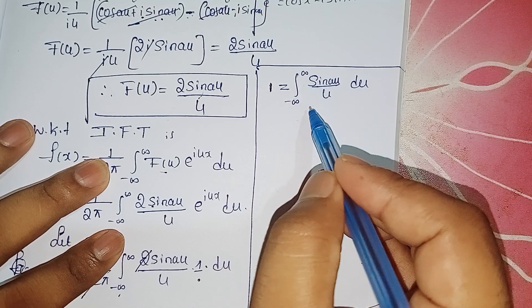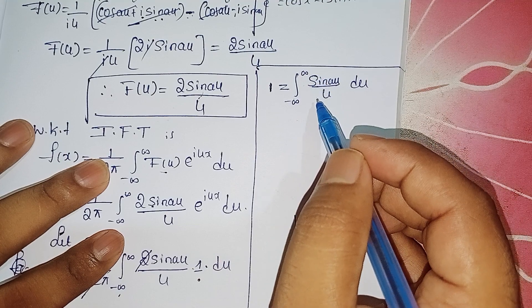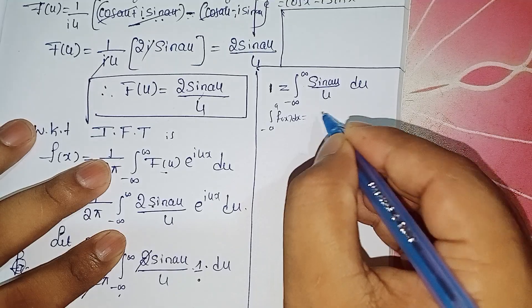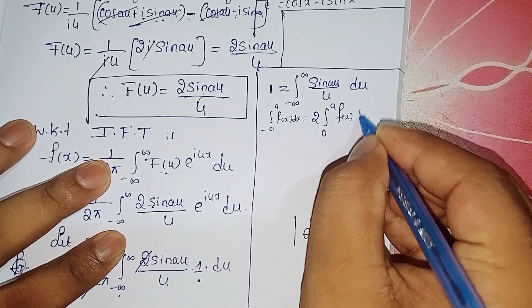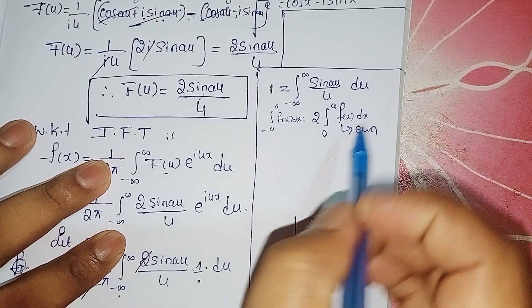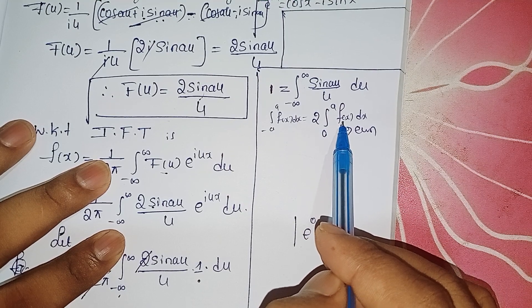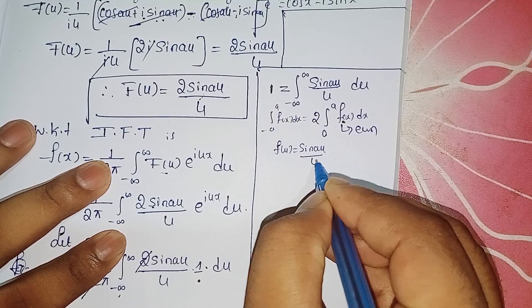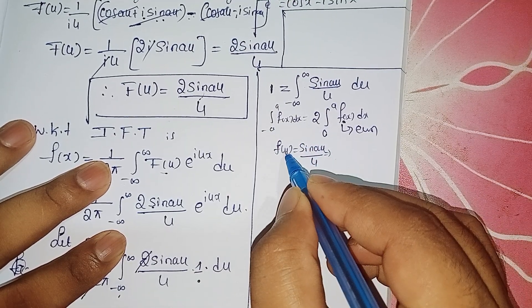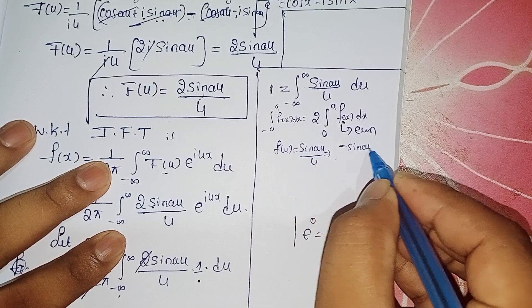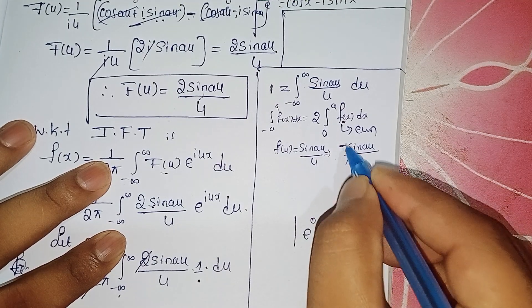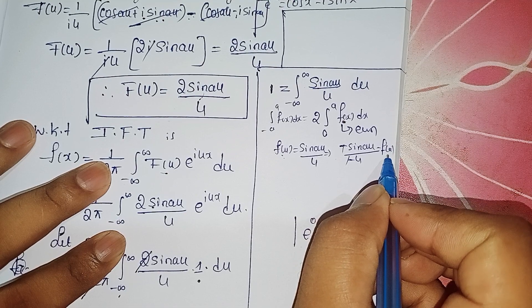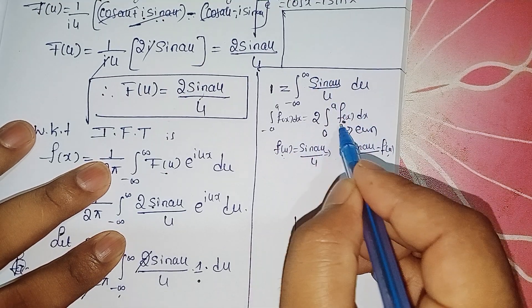Using the property: integral from minus a to plus a of f(x) dx = 2 times the integral from 0 to a of f(x) dx, when f(x) is an even function. To check: replace u by −u in sin(au)/u. We get sin(−au)/(−u) = −sin(au)/(−u) = sin(au)/u = f(u). Since replacing u by −u gives positive f(u), it is an even function. So the property applies.